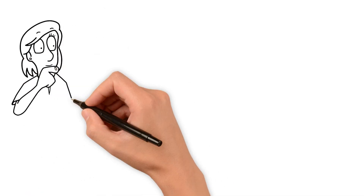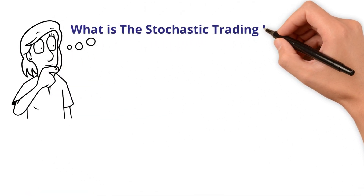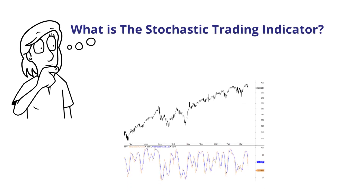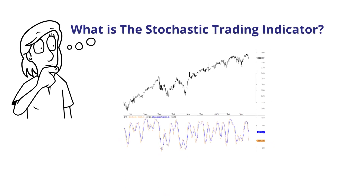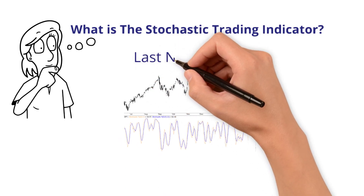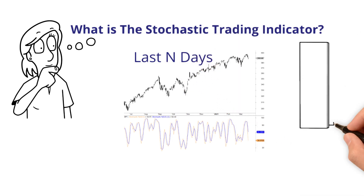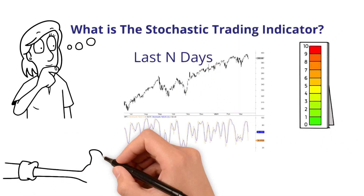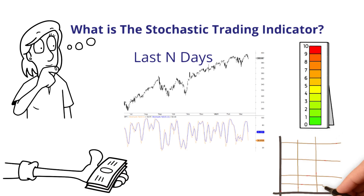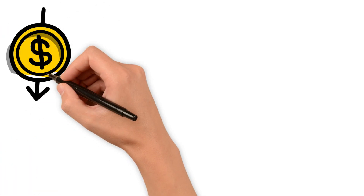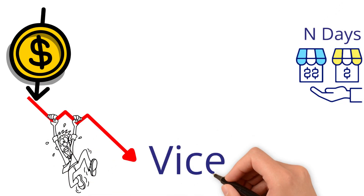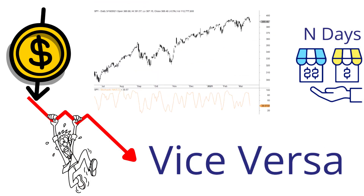Before we start, what is the stochastic trading indicator? Stochastics measures the recent strength of the stock and how it trades compared to the last N days. It measures the movement and how it fares today compared to the look-back period's high and low readings. If the current price is low compared to the high-low range over the preceding N days, the reading is low and vice versa, and thus it oscillates from overbought to oversold levels.